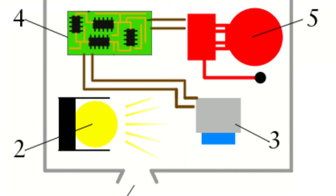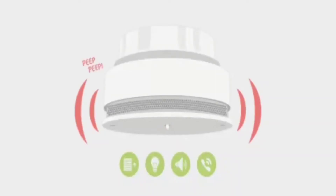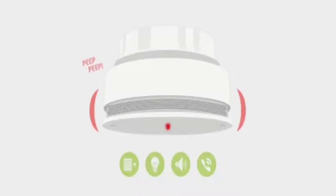Ionization-type smoke alarms are generally more responsive to fires that begin with a long period of smoldering, called smoldering fires.